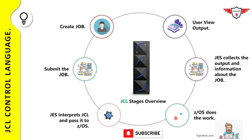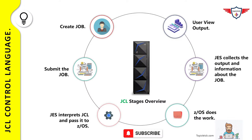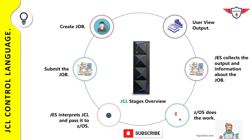Two important terms to know: First, JES stands for Job Entry Subsystem — it tracks jobs that enter the system, presents them to z/OS for processing, and sends their spool output to the correct destination based on job card parameters. Second, an initiator is a system program that processes JCL, sets up the necessary environment in an address space, and runs a batch job in that same address space. Multiple initiators permit the parallel execution of batch jobs.